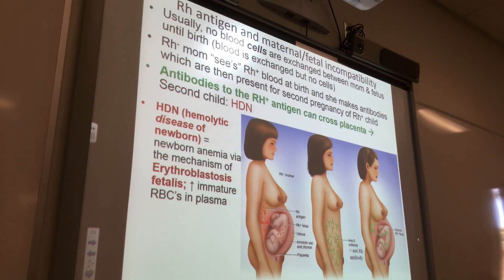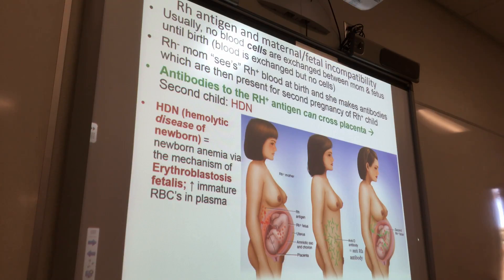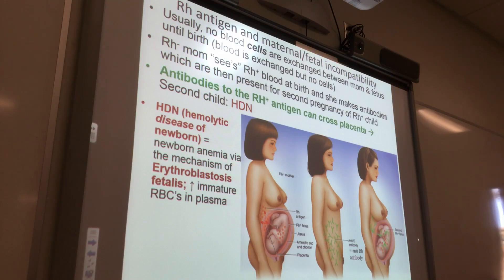You don't need to know this for the test, but you might be interested in it. What happens is in this second fetus, if you are low in red blood cells, you start cranking out red blood cells really quickly. And they're not fully mature, so they don't do what they're supposed to do, which is carry oxygen. So you crank out a whole lot of immature red blood cells and they don't work. And that's called erythroblastosis fetalis.